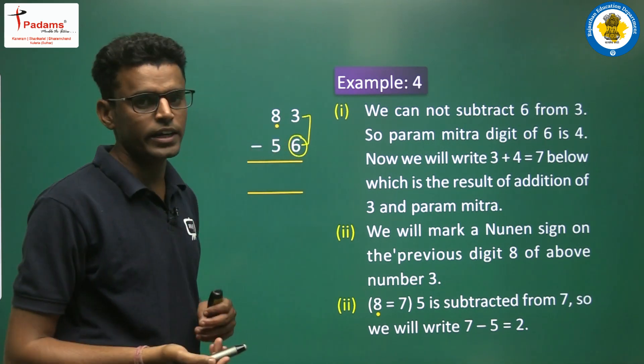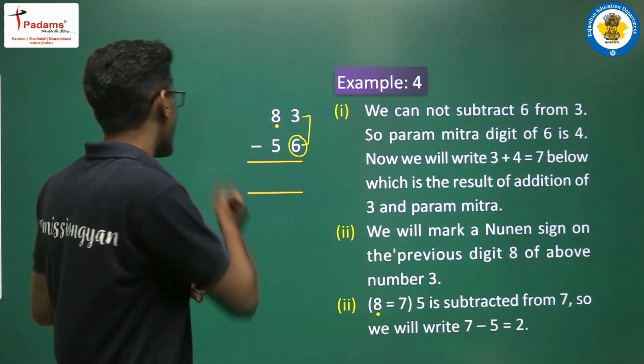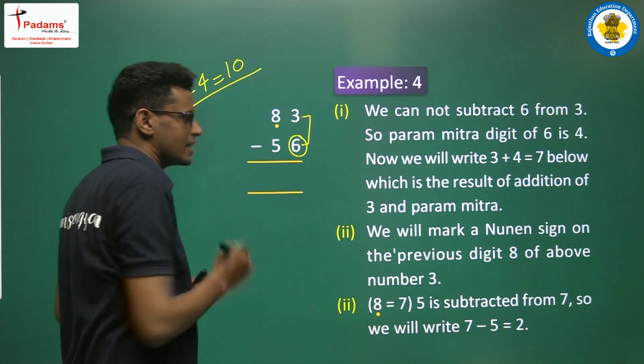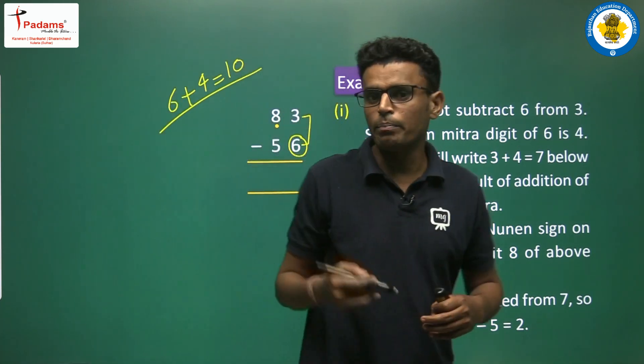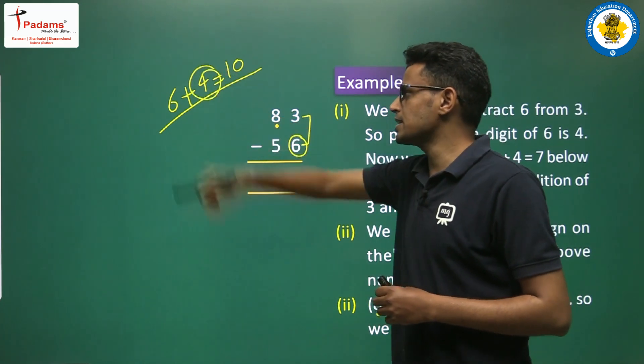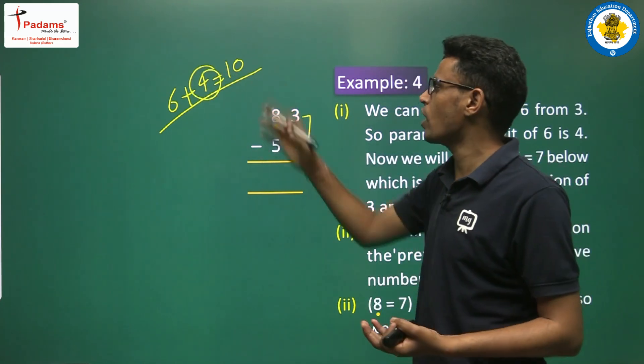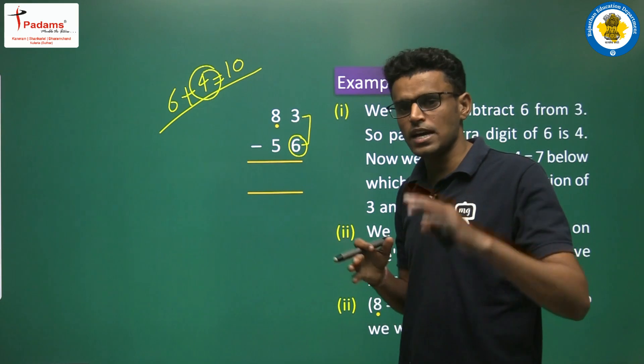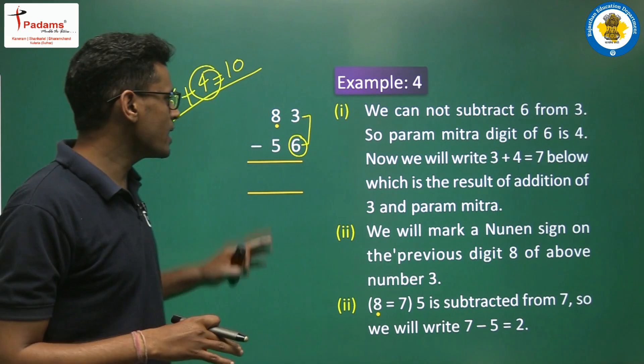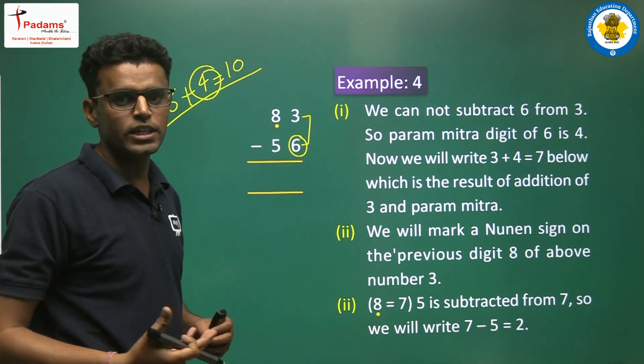We have 6. If we add 6 and 4, we get 10. So 6 and 4 are paramitra ankh. We have 6 here, so what digit disappears? That digit is 4. We got 4. Where did it come from? We checked the downside digit and found its paramitra.